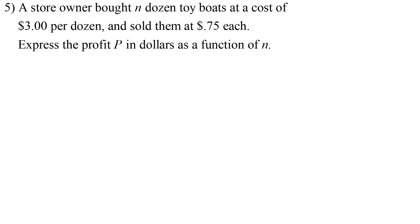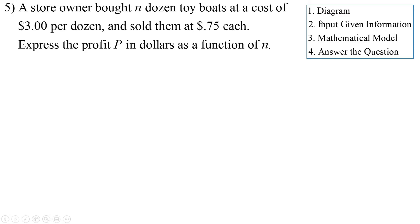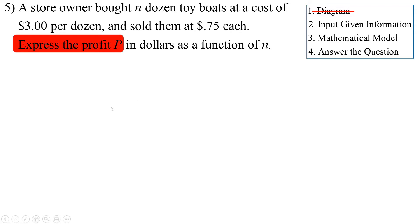Number five: a store owner bought N dozen toy boats at a cost of $3 per dozen and sold them at 75 cents each. Express the profit P in dollars as a function of N, the number of dozens sold. There's no geometric diagram here. Profit equals income minus cost — the amount you bring in minus the cost.